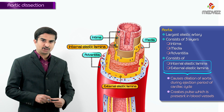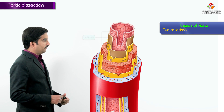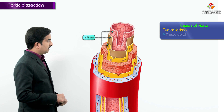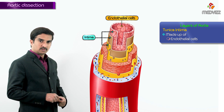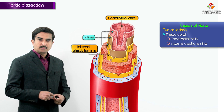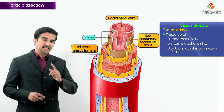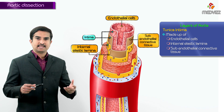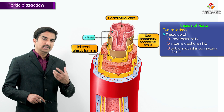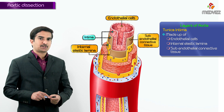The intima of the aorta is made up of endothelial cells, internal elastic lamina, and sub-endothelial basement membrane, also called sub-endothelial connective tissue. So endothelial cells, sub-endothelial connective tissue, as well as internal elastic lamina together form the intima.